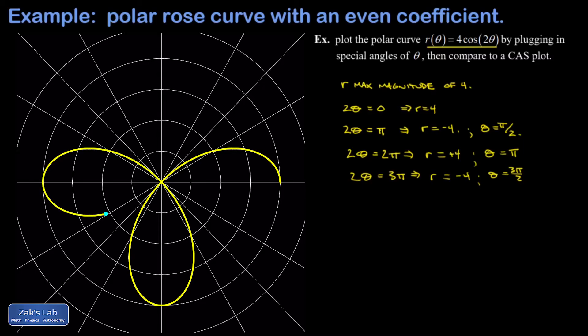So let's bring in an animation so we can get a really good sense for how this traces out for increasing θ. And I want to point out a couple things in the animation. First, in the prior video on a rose curve with an odd coefficient of θ, it turned out the number of petals was equal to the coefficient of θ.